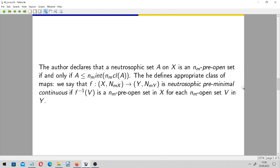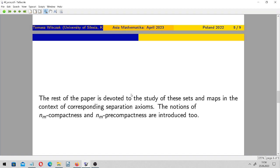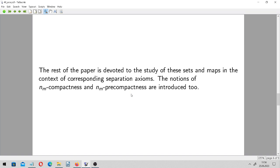So this is a kind of asymmetry here. This is common in such papers that we speak about pre-images of open sets and we expect that they will be, well, for example, in this case, pre-open. The rest of the paper is devoted to the study of these sets and these maps, mostly in the context of corresponding separation axioms. So there are some spaces like T0, T1, T2 defined, and the notions of compactness and pre-compactness in this framework are introduced and studied, too.